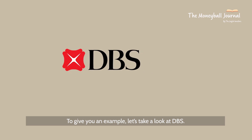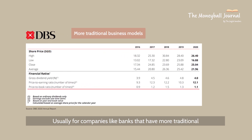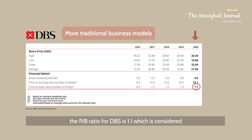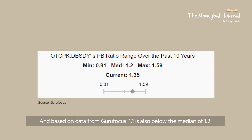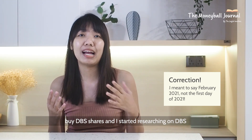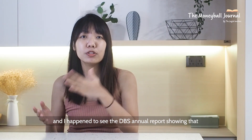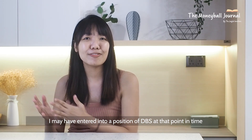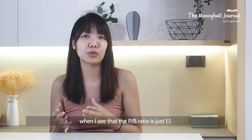To give you an example, let's take a look at DBS. For companies like banks with more traditional business models, we can also look at the P/B ratio, which works similarly to P/E except that we use book value instead of earnings. Based on the data, in 2020 the P/B ratio for DBS is 1.1, which is toward the lower range for the last 5 years, making it seem like a good buy. Based on data from Guru Focus, 1.1 is also below the median of 1.2. So on the first trading day of 2021, if I intended to buy DBS and saw the P/B ratio of 1.1, I may have entered a position at that point.